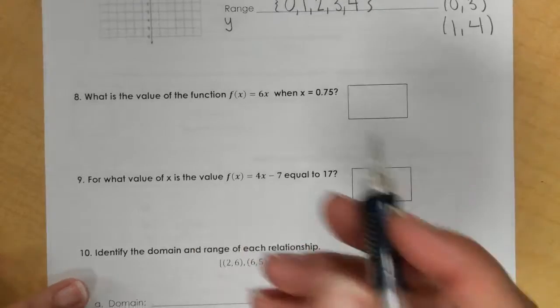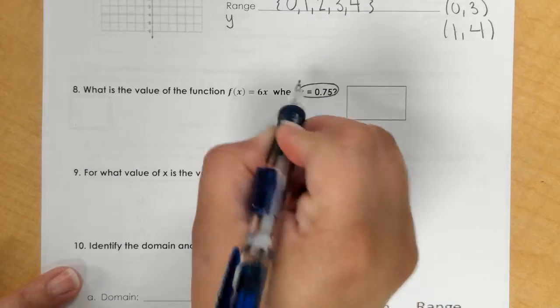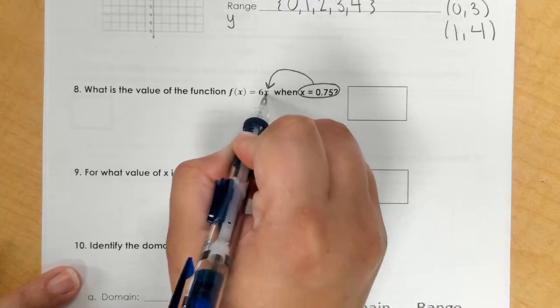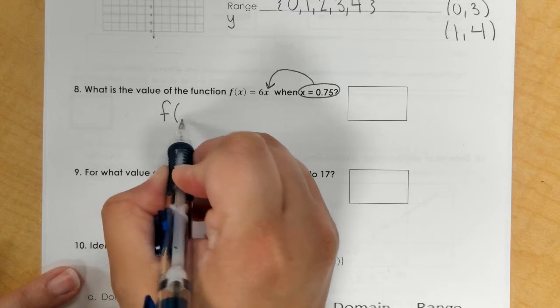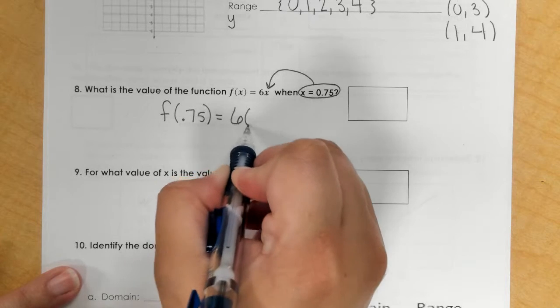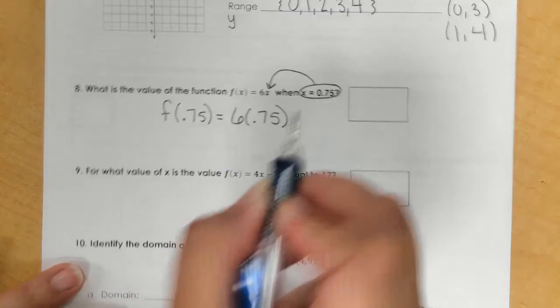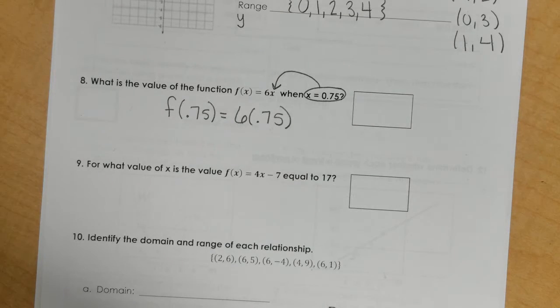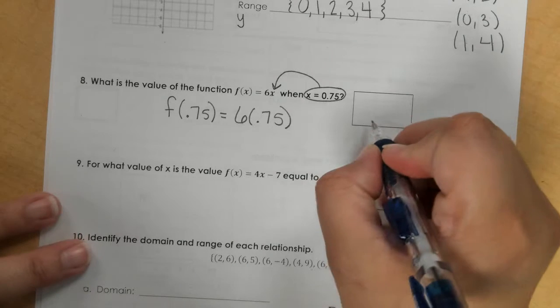For number 8, you're taking this 0.75 and plugging it into x. So when the function is at 0.75, I take 6 times 0.75. And what is 6 times 0.75? 4.5.